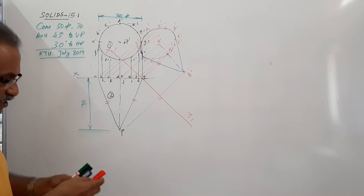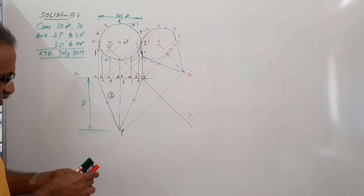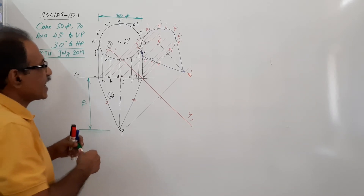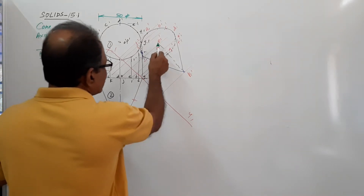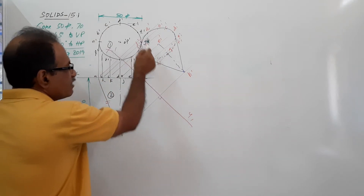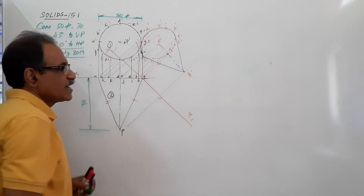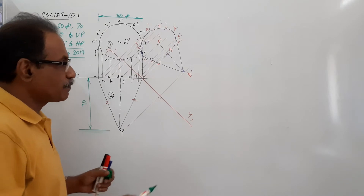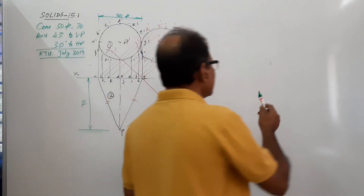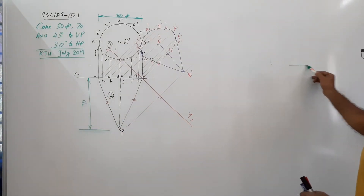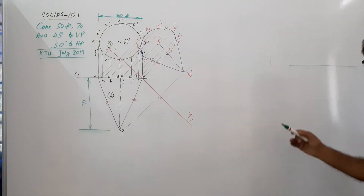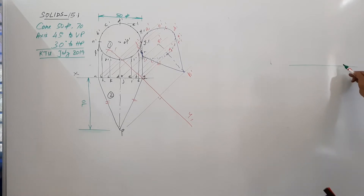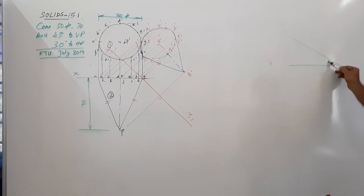This is the axis — elevation of axis, this is plan of axis, elevation of axis. Now you have to draw x2y2 and find out beta. We have already discussed how to find alpha. Draw a horizontal line, take a point, and draw a line at theta equals 30 degrees.